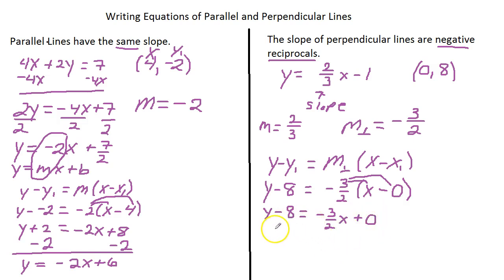If we were finished I wouldn't write the 0 there. Because I'm putting this into slope intercept form, I'm going to add 8, and we put it under the 0. So I now have y equals negative 3/2 x plus 8.